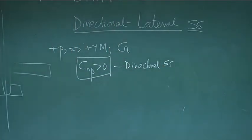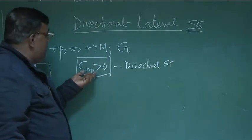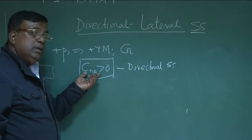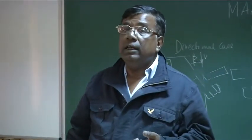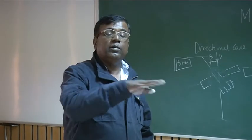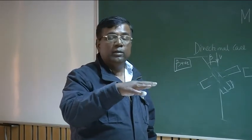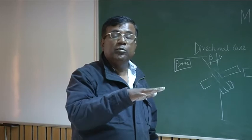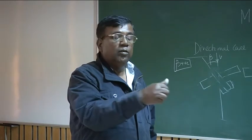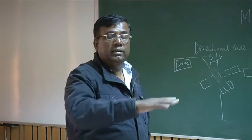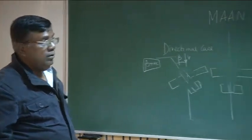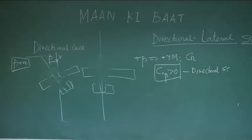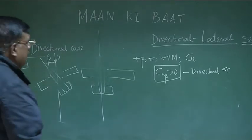Please understand that Cn_beta is a very important derivative. It has to be really well controlled, because if it is too high, then the airplane will become too sensitive to crosswind. If the wind is coming from this side, beta is positive, it will turn. You have to have a very clear understanding of the magnitude of Cn_beta you are going to design the airplane for.